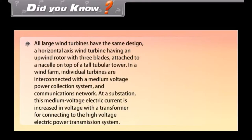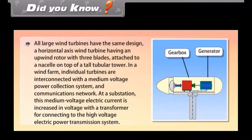Did you know? All large wind turbines have the same design: a horizontal axis wind turbine with an upwind rotor with three blades attached to a nacelle on top of a tall tubular tower. In a wind farm, individual turbines are interconnected with a medium voltage power collection system and communications network. At a substation, this medium voltage electric current is increased in voltage with a transformer for connecting to the high voltage electric power transmission system.